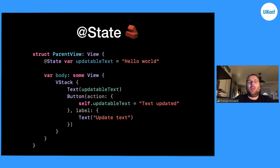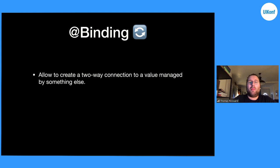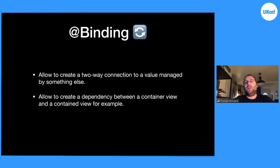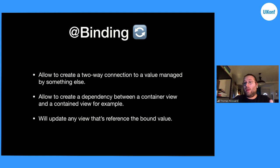We can push it one step further and use the Binding property wrapper. Binding allows you to create a two-way connection to a value managed by something else. It allows you to create a dependency between a parent view and a child view, or between container views. Whenever you update the state or the bound value, it will update back to the root of the state. If you pass it to nested subviews, it will update back to the state and reload all the views that the binding is passed to.